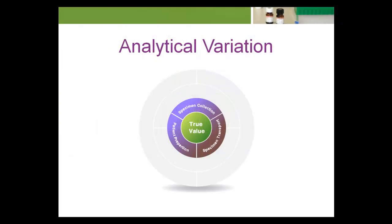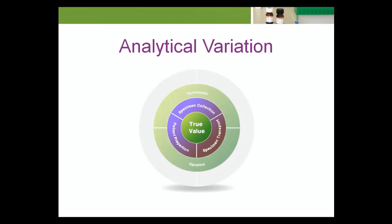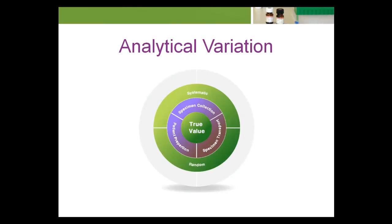Now let's focus on analytical variation. Analytical variation is the variation that occurs during the analysis of a sample. This variation can take two forms: random and systematic.